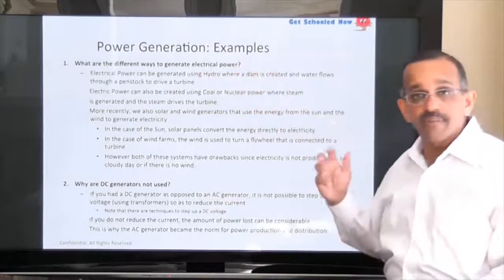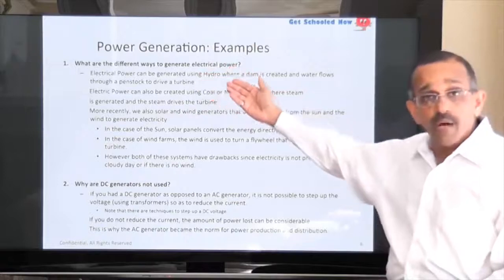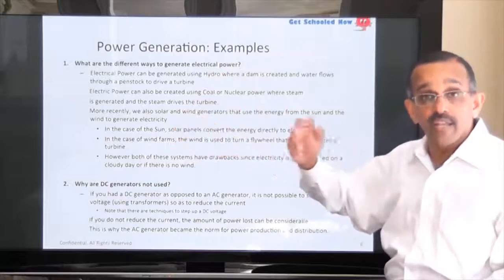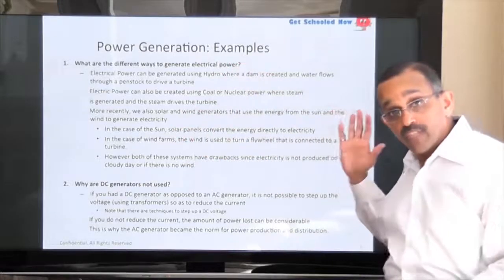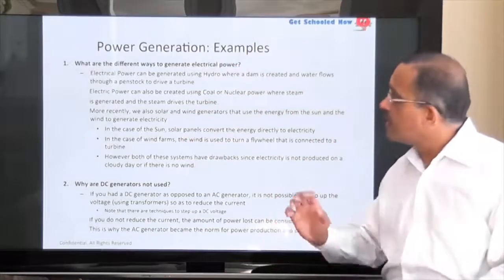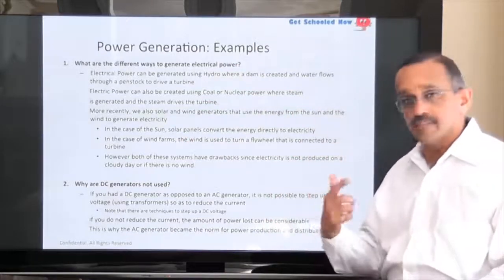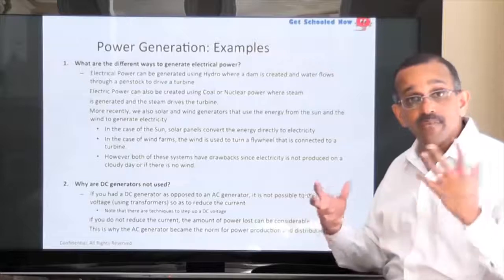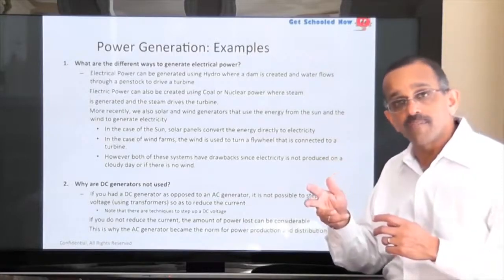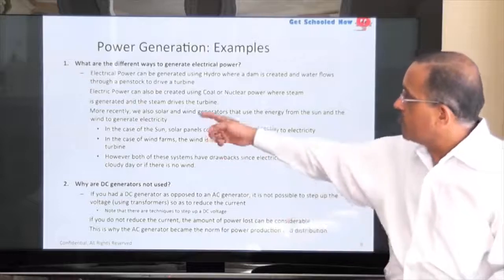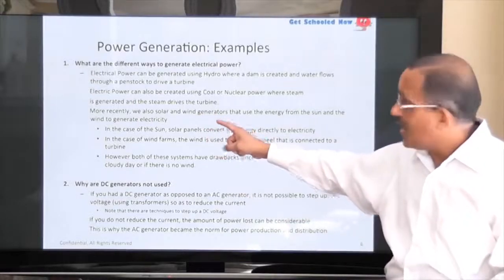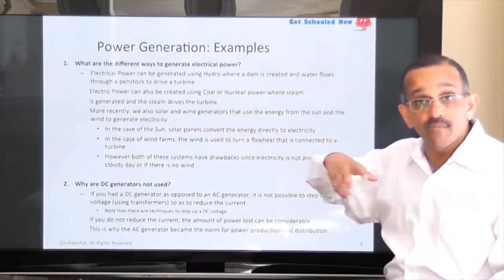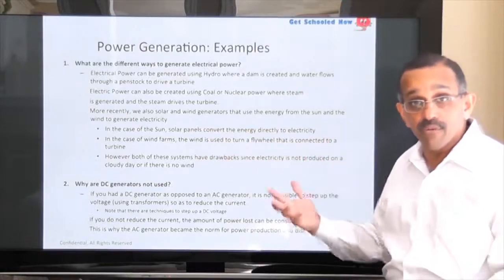What are the different ways to generate electrical power? Electrical power can be generated using hydro — we saw an example of that — nuclear, and coal. In hydro, damming the water and the flow of rushing water turns the turbine. In the case of nuclear and coal, you heat the water up to generate steam, and the steam causes the turbines to rotate. We can also use solar and wind generators to generate power; however, the drawback is that on a cloudy day or if there's no wind, you're not able to generate power using those methods.